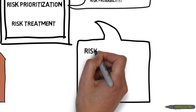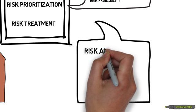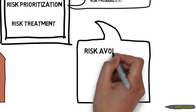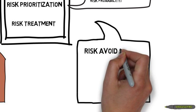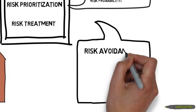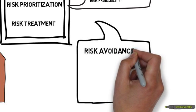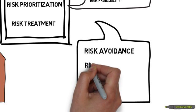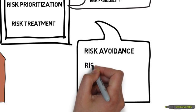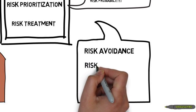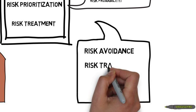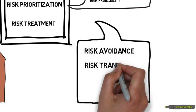The first risk treatment is risk avoidance. For example, if there is a risk related to a new component, it is possible to postpone this development to a new release. This is a slightly uncommon risk treatment.